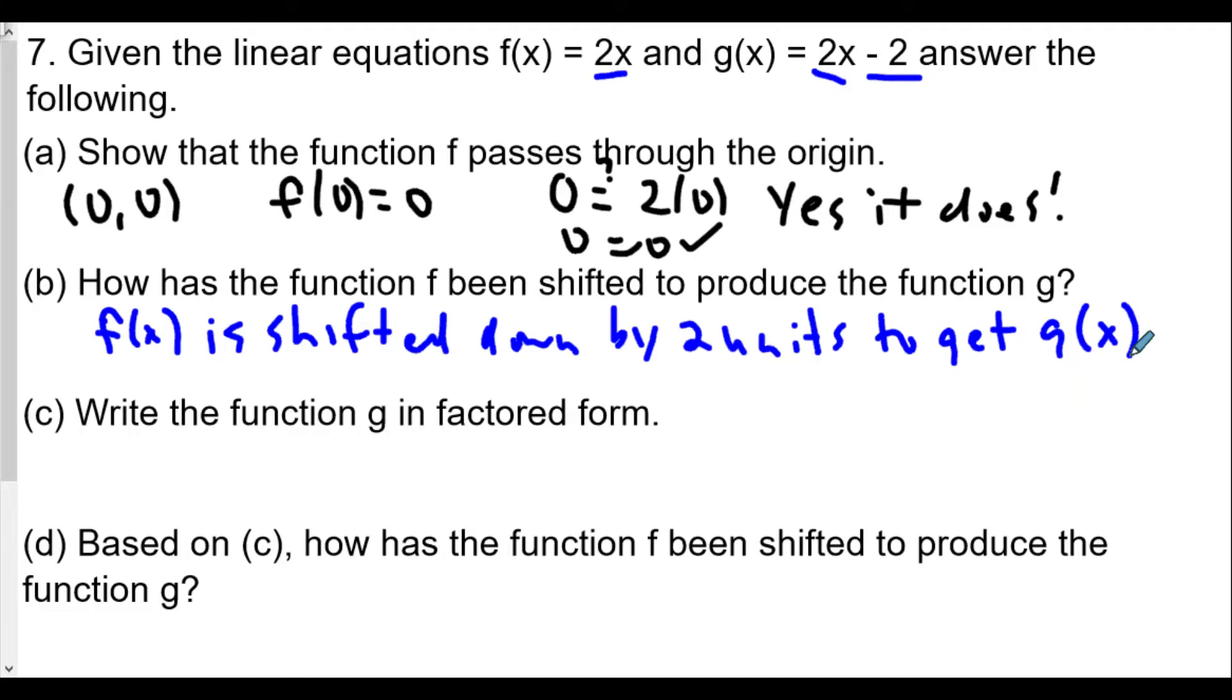Part (c): Write the function g in factored form. So g(x) = 2x - 2, and the GCF, the greatest common factor, is 2. We can factor out the 2 to get 2(x - 1), and that's our factored form of g(x).